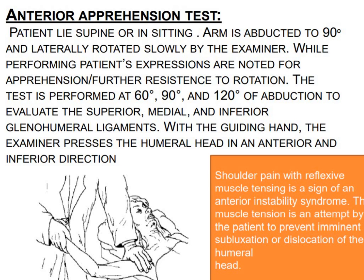The first test is the anterior apprehension test. The patient will lie supine or sit. The arm is abducted to 90 degrees and laterally rotated slowly by the examiner. While performing the test, the patient's expressions are noted for apprehension and further resistance to rotation. The test is performed at 60, 90, and 120 degrees of abduction to evaluate the superior, medial, and inferior glenohumeral ligaments.